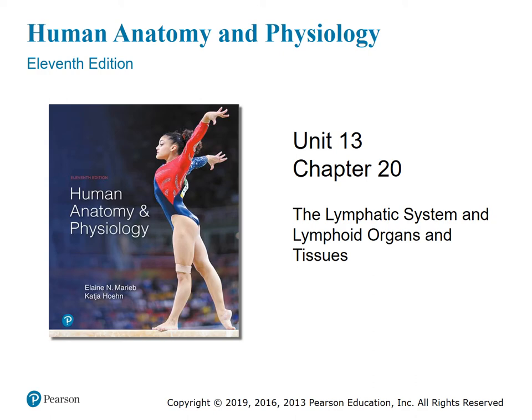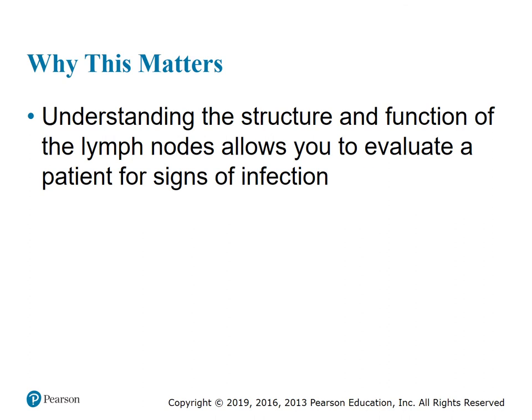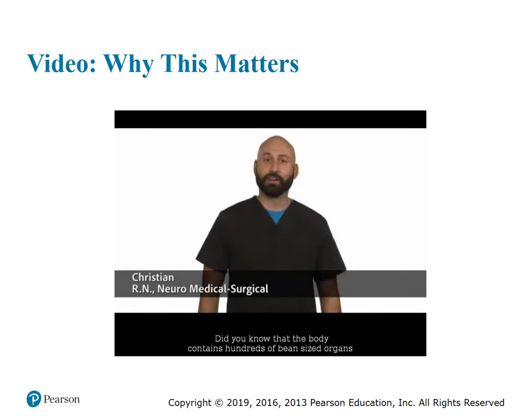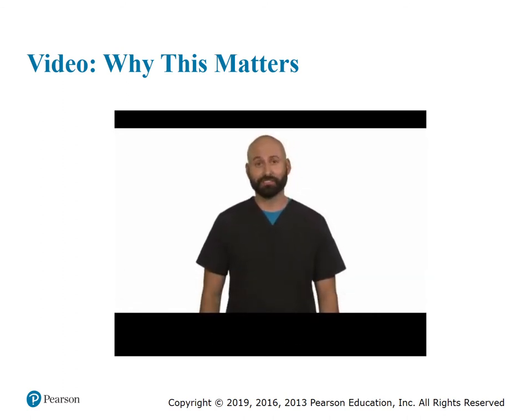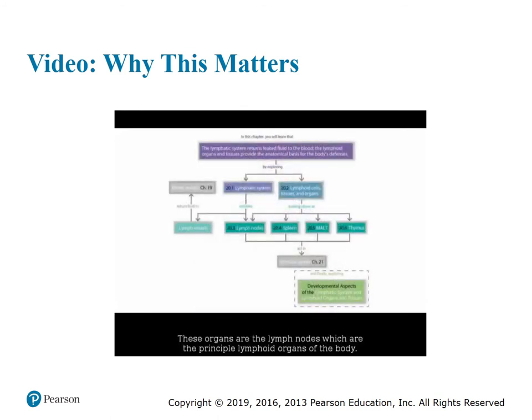Good afternoon. Today we're going to look at unit 13 chapter 20, the lymphatic system and lymphoid organs and tissues. You might hear some children in the background — I'm at the park doing this presentation. Did you know that the body contains hundreds of bean-sized organs that are critical to fighting off infections? These organs are the lymph nodes, which are the principal lymphoid organs of the body.